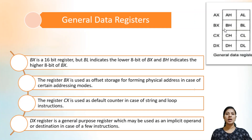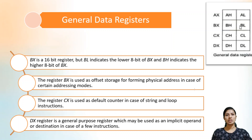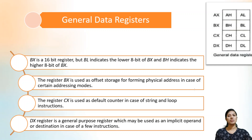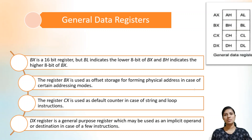Regarding the BX register, it is also a 16-bit register with two parts: BL (lower 8 bits) and BH (higher 8 bits). The BX register is used as offset storage for forming physical addresses in the case of certain addressing modes, which will be discussed later.